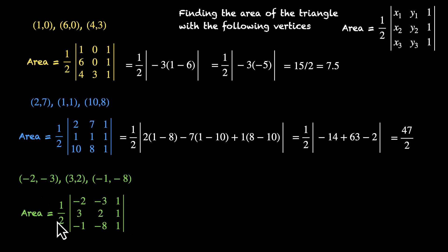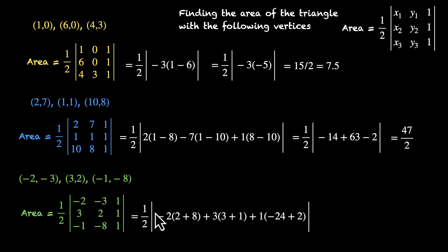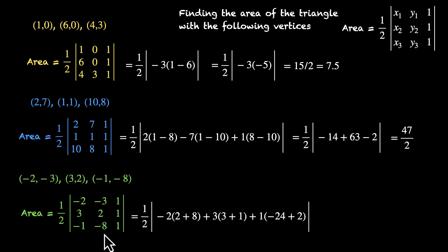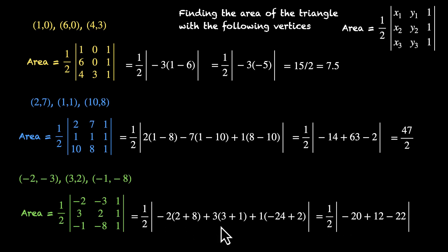Let's solve the third one. The determinant is half of |–2, –3, 1 / 3, 2, 1 / –1, –8, 1|. Expanding: –2×(2 – (–8)) – (–3)×(3 – (–1)) + 1×(3×(–8) – (–1)×2) = –2×10 + 3×4 + (–24 + 2) = –20 + 12 – 22 = –30. Taking half the magnitude: |–30|/2 = 15. So the area of this triangle is 15.